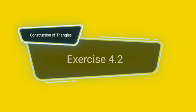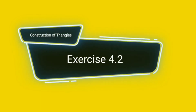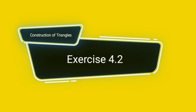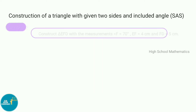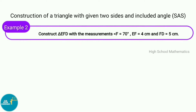Hello everyone, welcome to High School Mathematics channel. Today we are going to learn Class 7, Semester 2, Chapter 4: Construction of Triangles, Exercise 4.2. Construction of a triangle with given two sides and included angle.